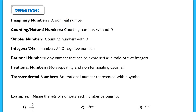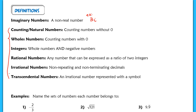Our very first definition is actually a set of numbers that are not real — these are called the imaginary numbers. From algebra, you remember solving quadratics with non-real solutions. Something like 3i is an example of an imaginary number. I'll follow here with some examples of the different classifications of numbers. From here on out, we are dealing with real numbers.